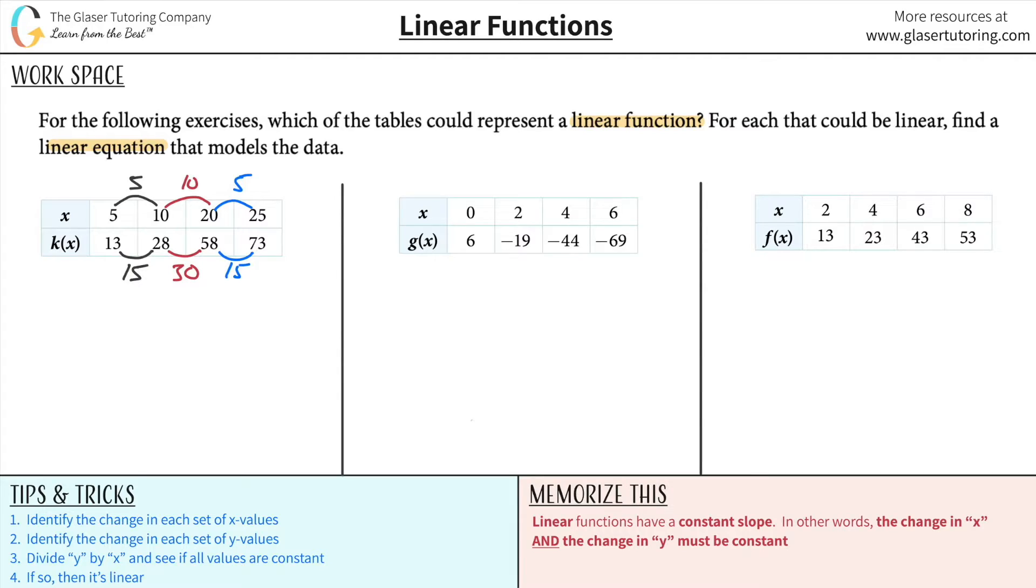Now I need to find the slope value. The slope value is simply the change in y over the change in x. So the one in black was 15 divided by 5, which is 3. The one in red is 30 over 10, that's also 3. And last but not least, 15 over 5. It's the same. Once you notice that these are all the same value, you know you're dealing with a linear function.